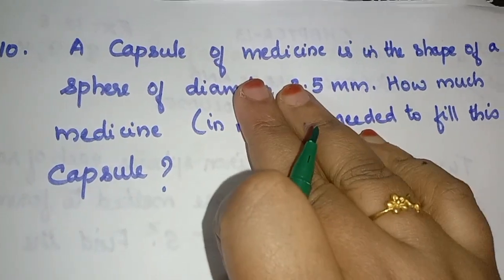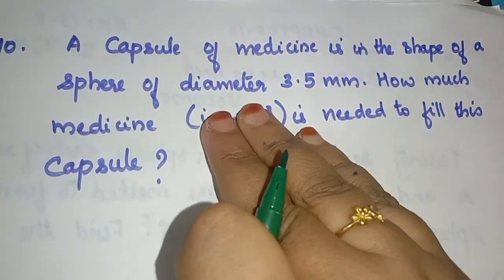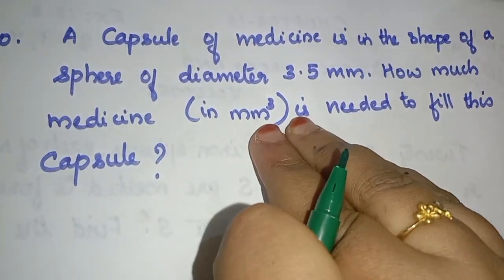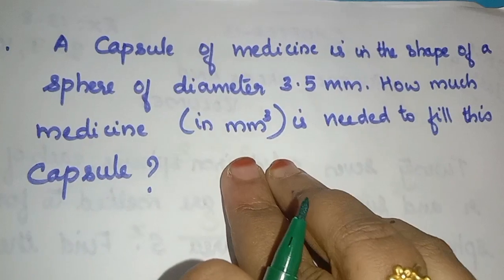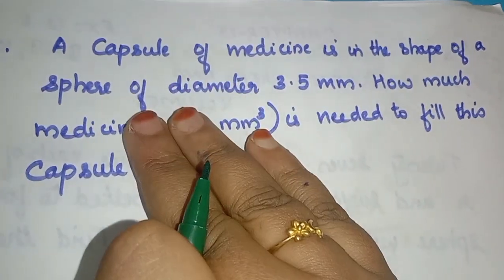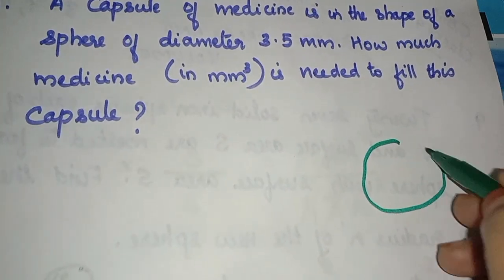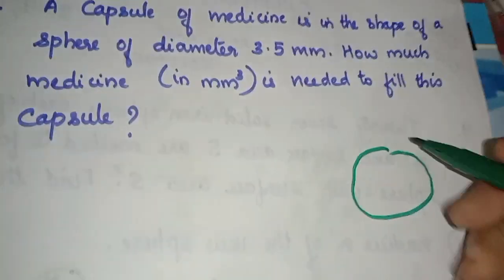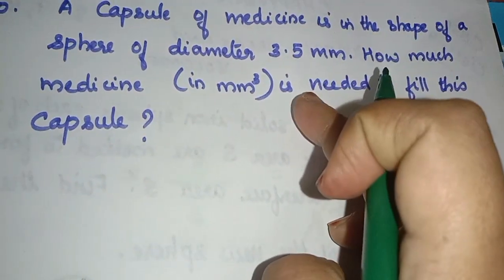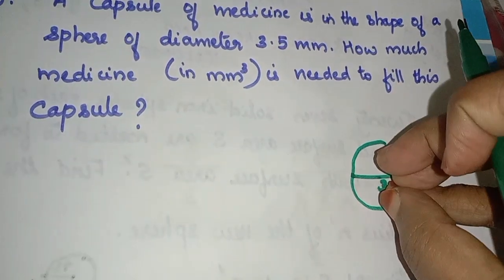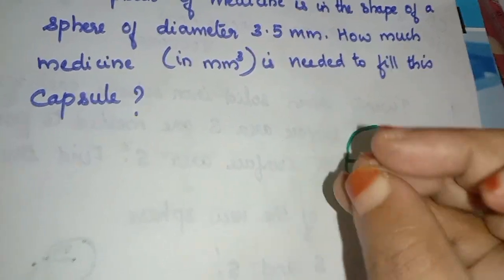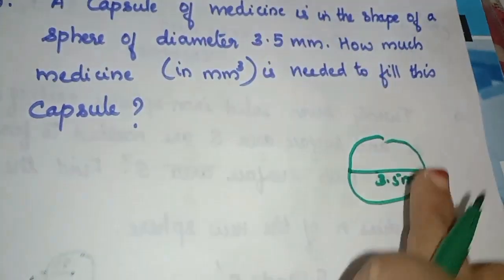Next question: A capsule of medicine is in the shape of a sphere of diameter 3.5 mm. How much medicine in mm cube is needed to fill this capsule? The capsule is a sphere shape with diameter 3.5 mm.